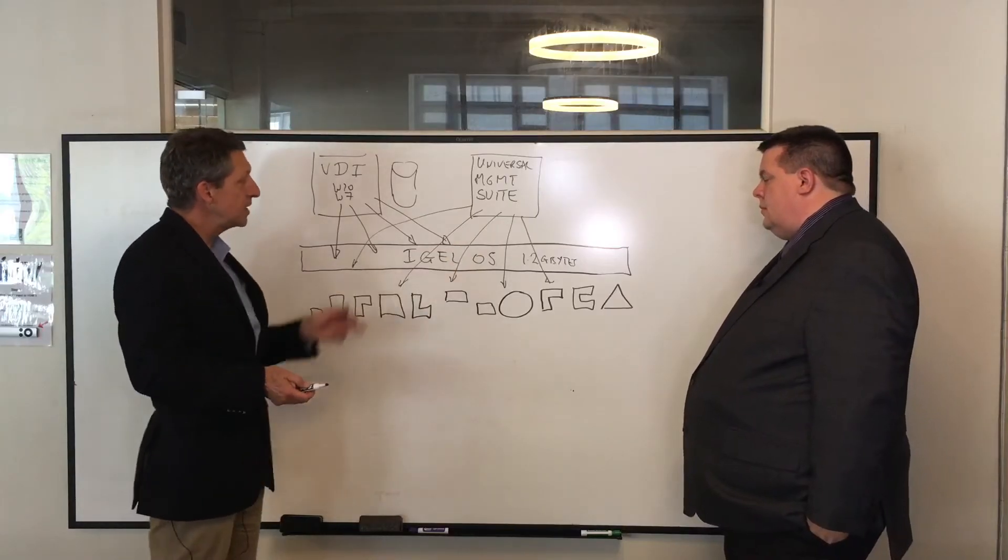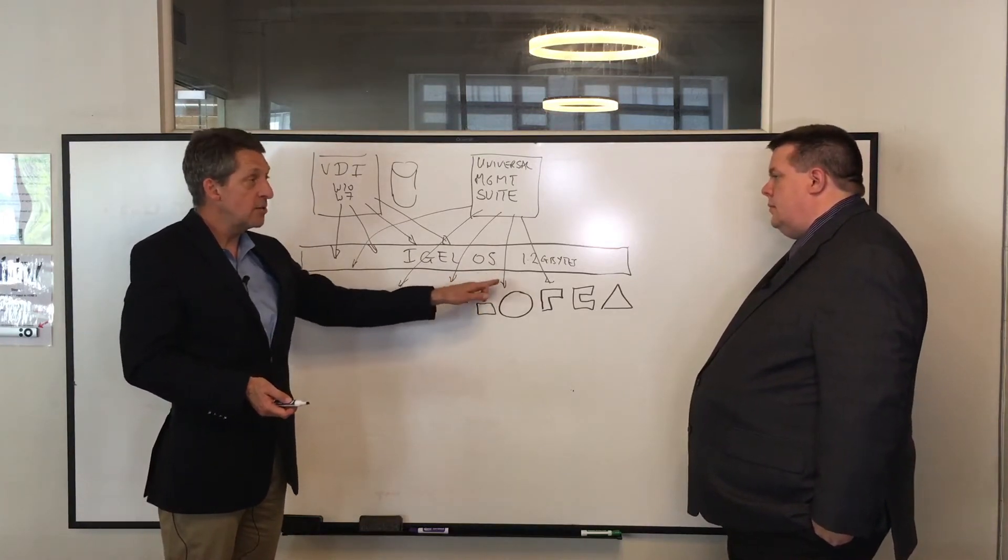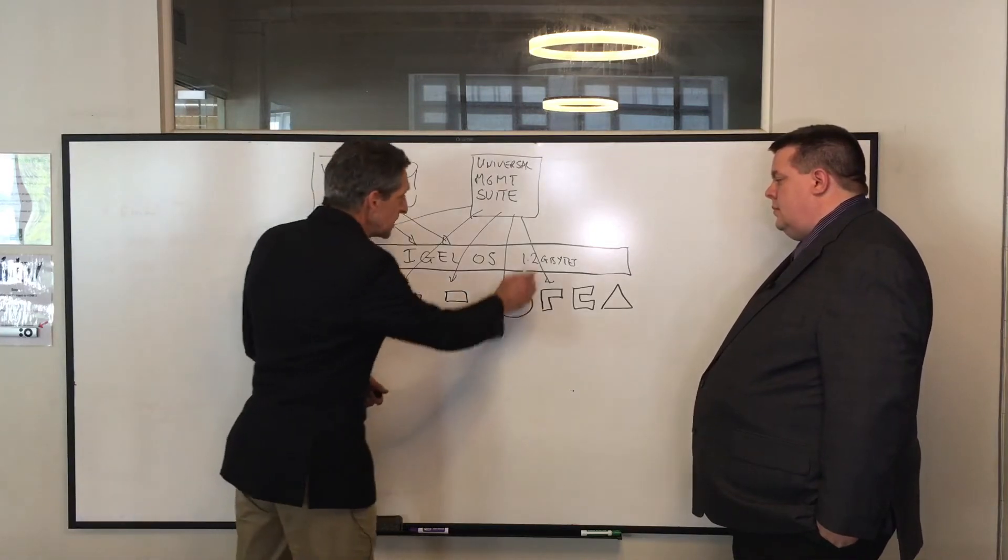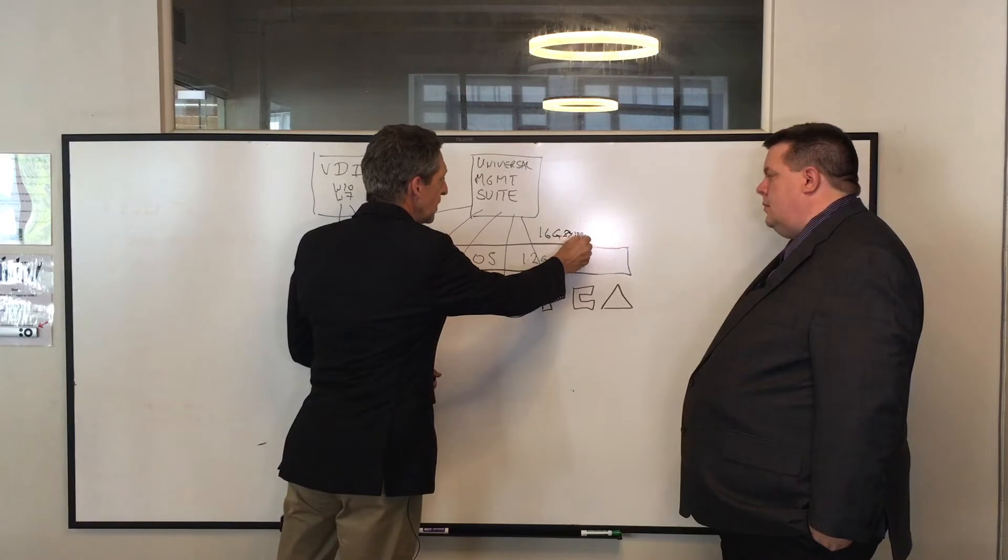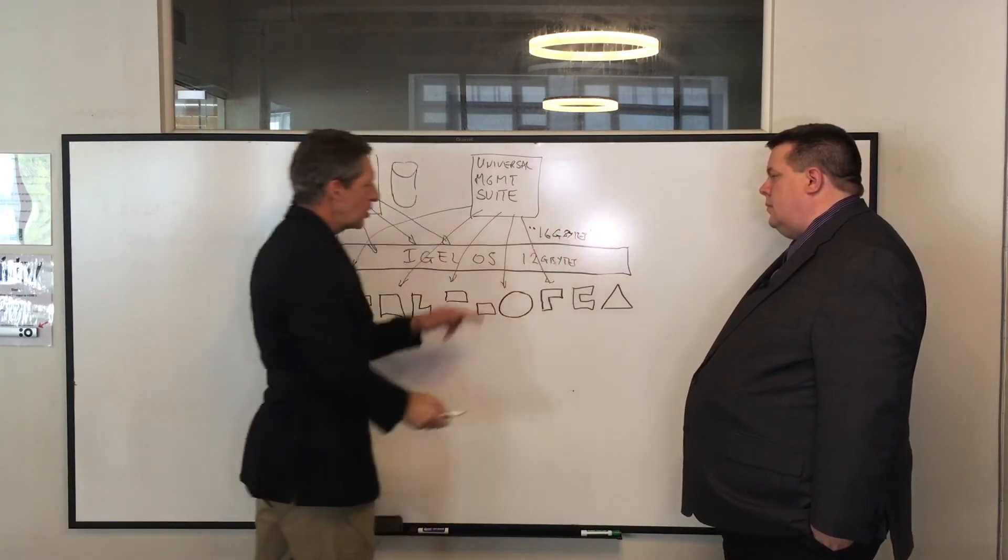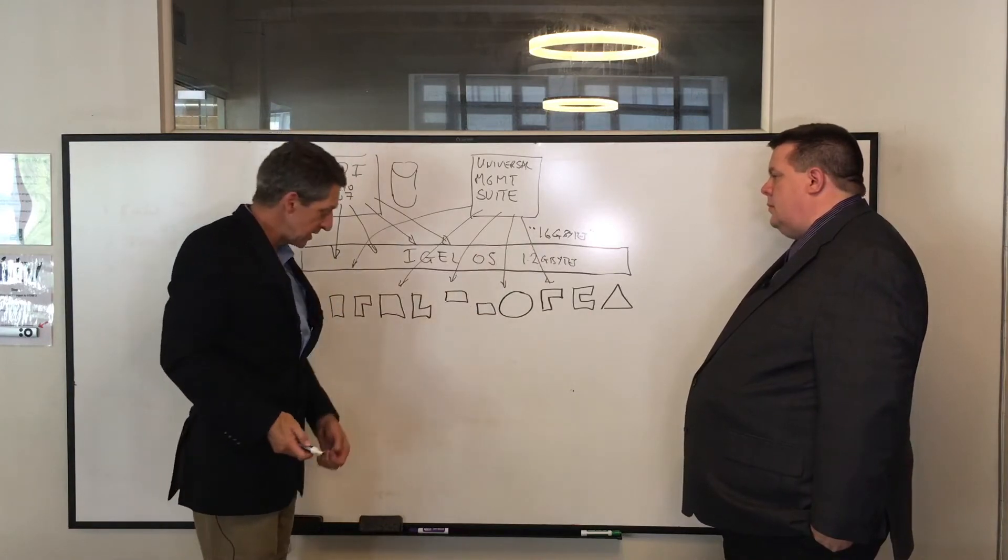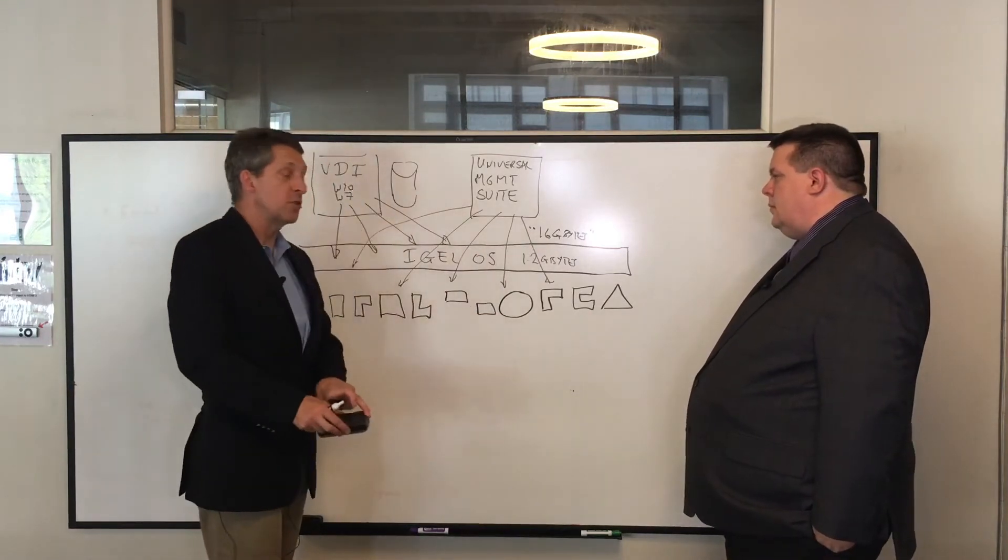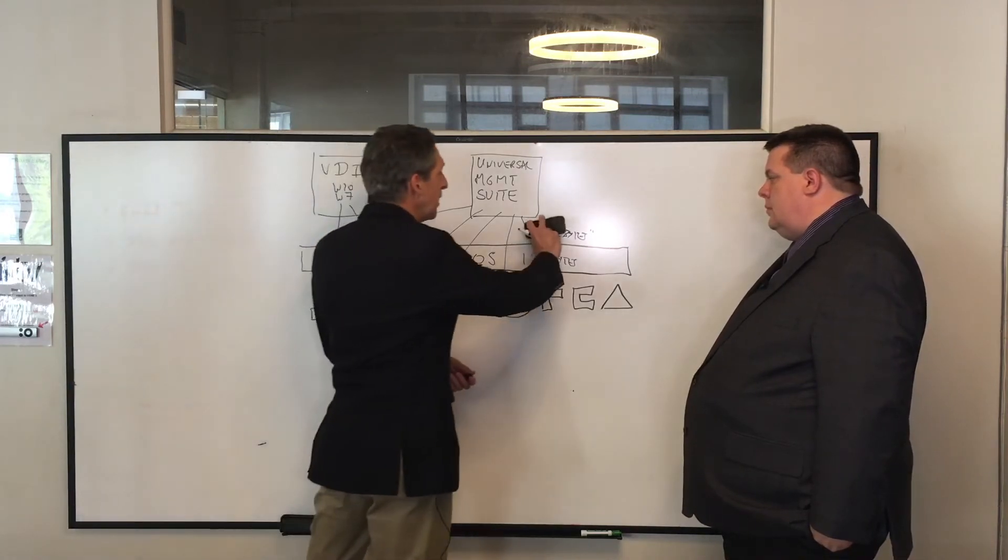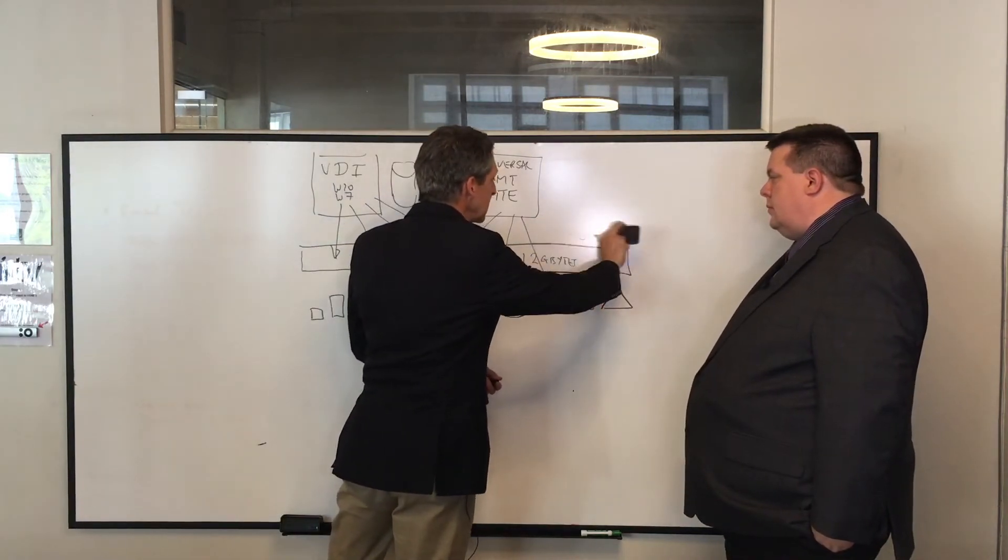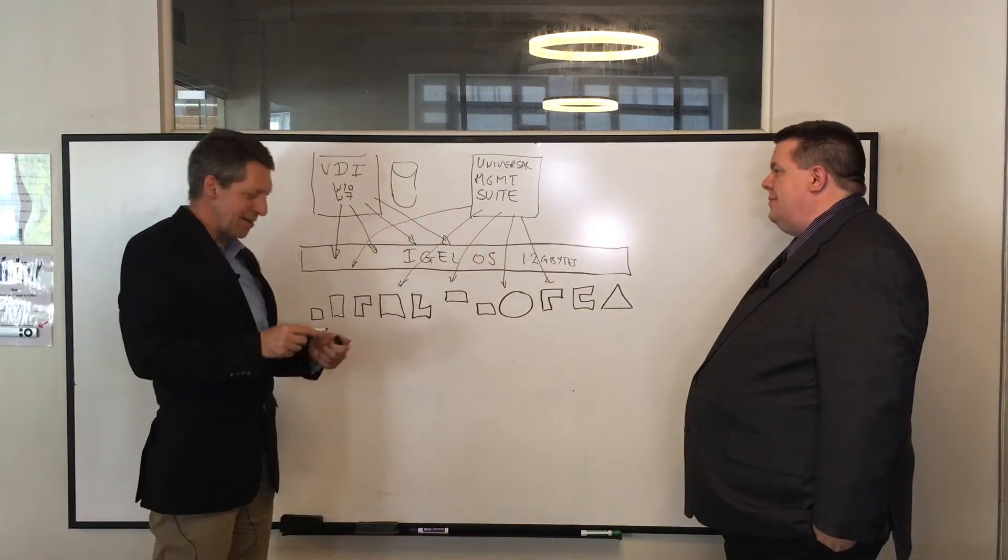As opposed to running Windows, Windows 10, Windows 10 IoT, Windows 10 S, which are all essentially 16 gigabytes. So imagine you've got a choice between a 1.2 gigabyte operating system or a 16 gigabyte operating system. And guess which one's a lot more secure, which one's easier to manage, which one has less probability it's going to be attacked. I'm going to guess it's this one. You're guessing it's the IGEL OS. Good job, Scott. I do. You made the right guess.